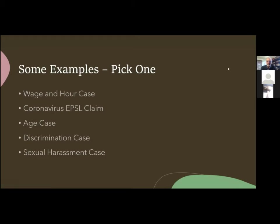The same applies to that age discrimination case I described at the start. If we had taken it to mediation early on, the parties could have reached a confidential agreement for far less than the defendant spent defending it over six years, with far less time consumed for key company personnel. Wage and hour cases are also very attorney's-fee intensive. I defended one where an employer had wage and hour liability — the actual liability was about $750 in unpaid overtime.